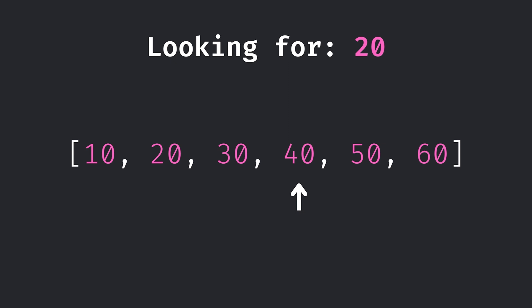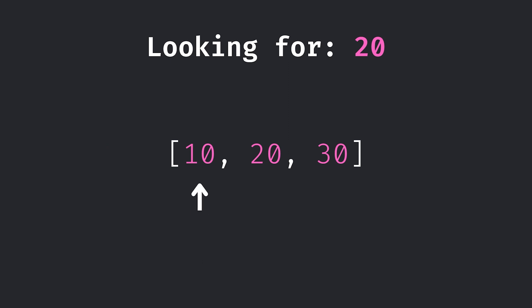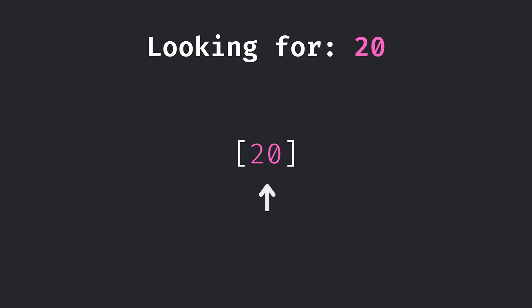In binary search, you have a target value you're looking for — say the number 20 in a data set. You pick a random point and see what the value is. If I picked 40, I'd know 40 is more than 20, so I'm going to only look left in the data set because it's in an ordered index. Say we pick another value and it turns out to be 10 — 20 is more than 10, so we look right. You keep decreasing the border size until you find what you're looking for. That process is much faster — it might only take five or ten attempts rather than linear search where you could take up to a hundred.